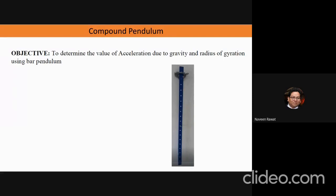The object you're seeing on your slide is the bar pendulum. Previously in school you might have dealt with the motion of a simple pendulum, in which you have a string tied at one end and on the other end you have some mass attached. We let the mass oscillate and once it does oscillations, we record the time period, which is related to the length of the pendulum.